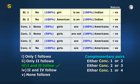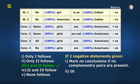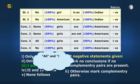I understood, sir. In such questions, if there is no complementary pair then I'll directly select 'no conclusion follows', otherwise I'll answer with the complementary pairs from them. Right Vidya, and always remember the condition that 'all' and 'no' never make complementary pairs.